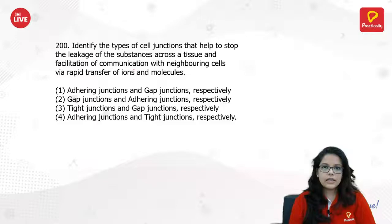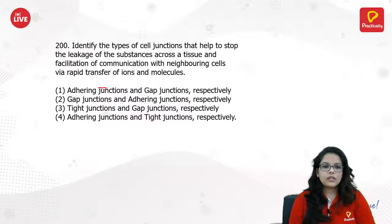Identify the types of cell junctions that help to stop the leakage of substances across tissue and also facilitate communication with neighboring cells via rapid transfer of ions and molecules. Not adhering junctions — the answer is tight junctions and gap junctions.